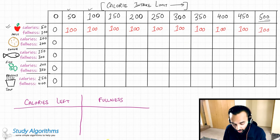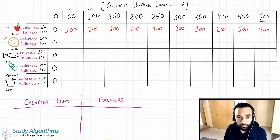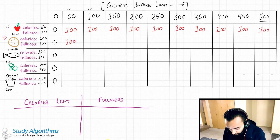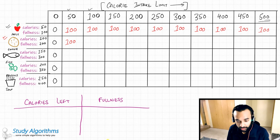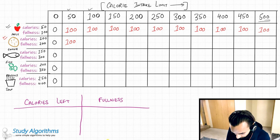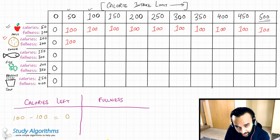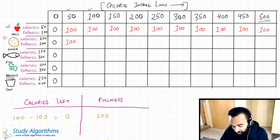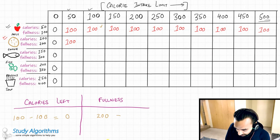Moving on — now we have two items: an apple and a cookie. We have already computed that the fullness value for zero calories is zero, and for 50 calories it is 100, so I copy that value down. Now my calorie intake limit is 100. I can either eat an apple or a cookie. Since we have already calculated everything about the apple, let us try to eat a cookie. I eat the cookie, I have no calories left, and I get a fullness value of 200. This is more than the 100 achieved by just eating the apple, so I write 200 in the table.